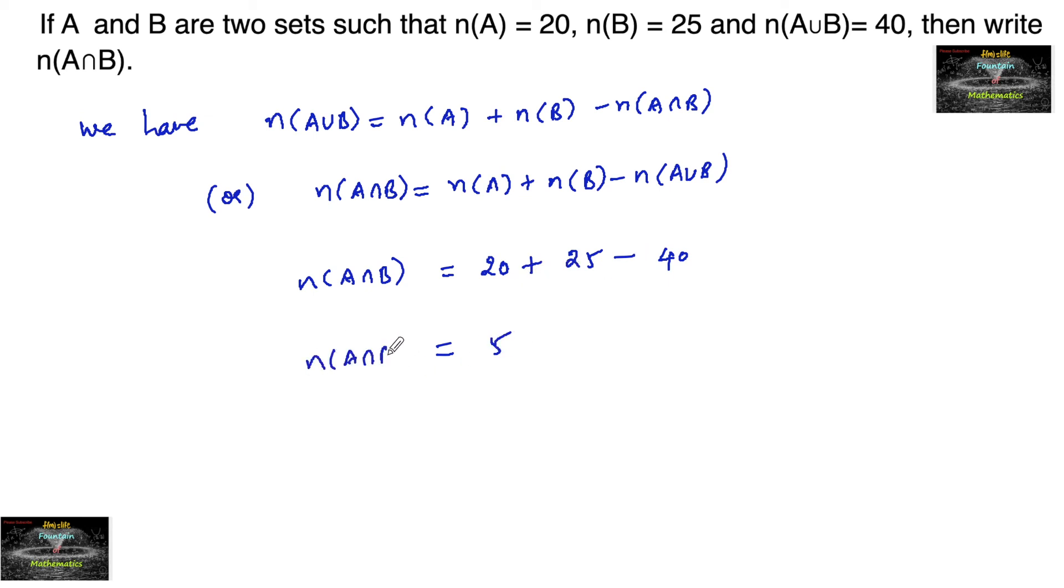So the number of elements in A intersection B can be taken as 5. Thank you.